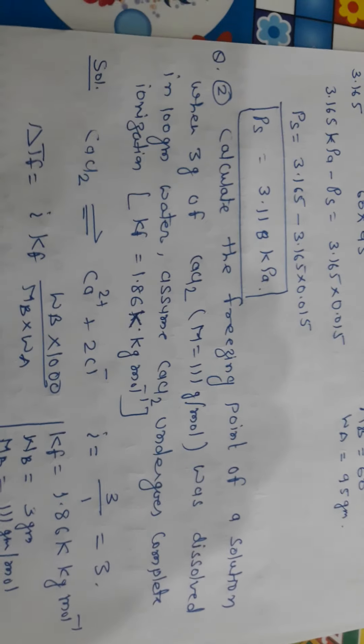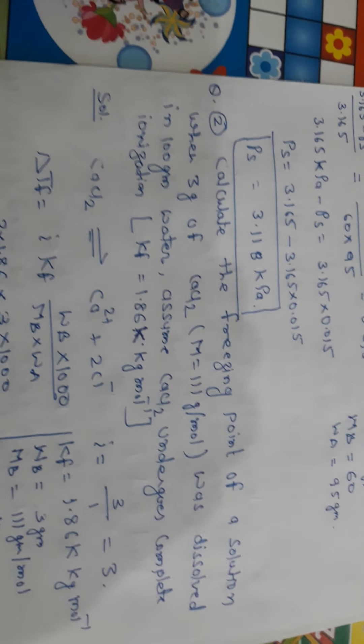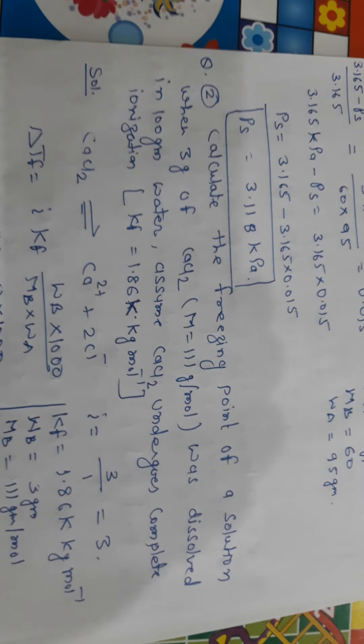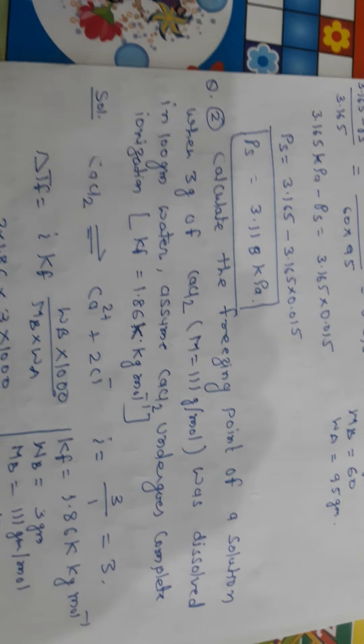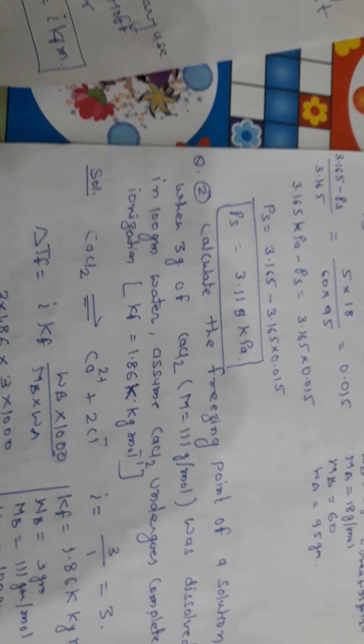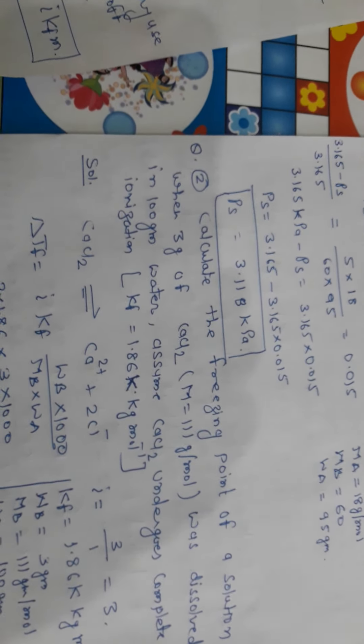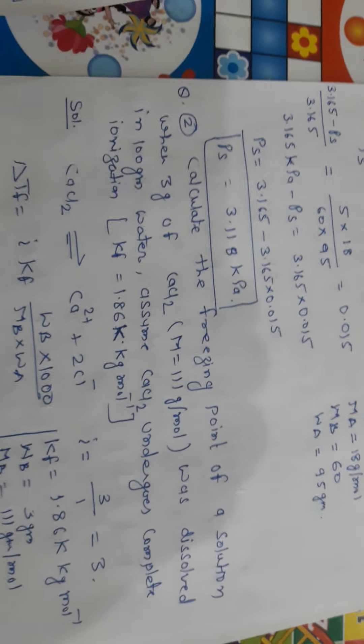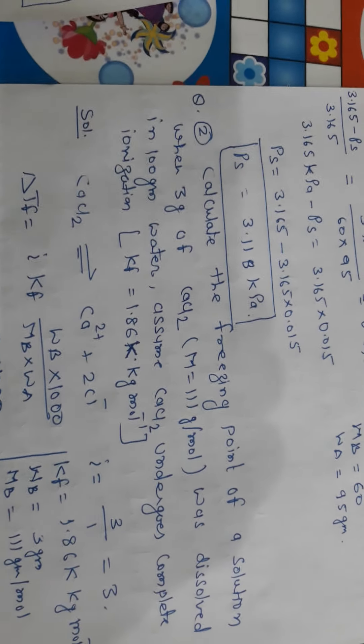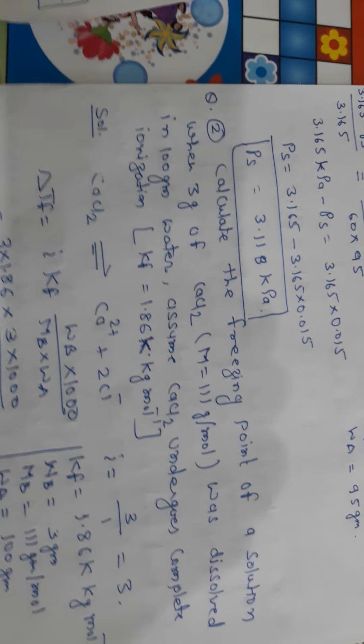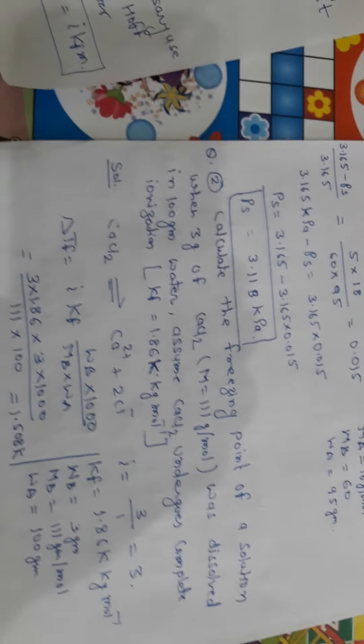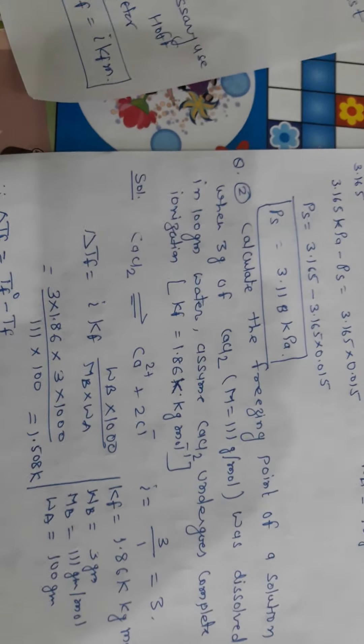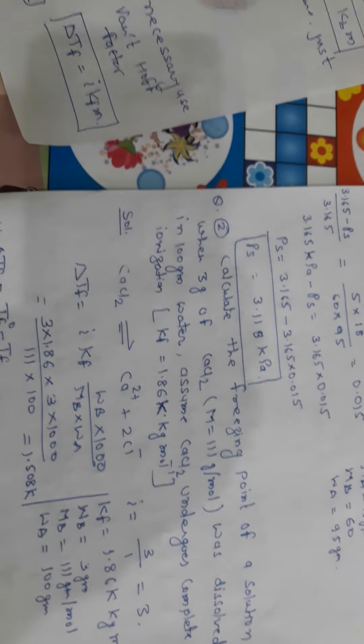Calculate the freezing point of the solution when 3 gram of CaCl2 were dissolved in 100 gram of water. Assume CaCl2 undergoes complete ionization. Here he has given you a direction to use van't Hoff factor. He has written, it undergoes complete ionization. That means dissociation will take place. So first we have to find out the I.